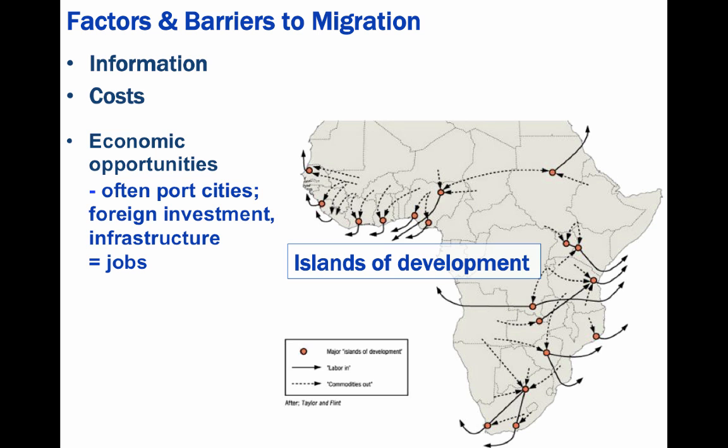These migrants, usually young men, worked until the oil economy took a fall in the early 1980s. At that point, the Nigerian government decided the foreign workers were no longer needed, and they forcibly pushed out 2 million foreign workers.